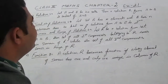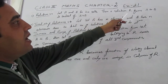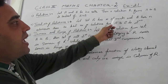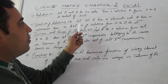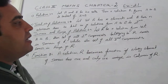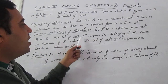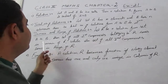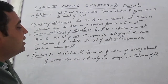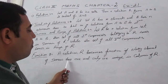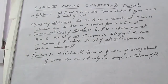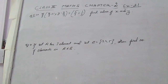Chapter 2: Relations. Let A and B be two sets. A relation R from A to B is a subset of A cross B. If set A has m elements and set B has n elements, then the total number of relations from A to B is 2 raised to the power mn. Domain and range: the set of all first components in R is the domain, and the set of all second components is the range. A relation R becomes a function if every element of the domain has one and only one image in its co-domain.